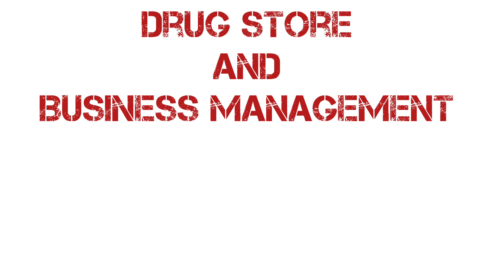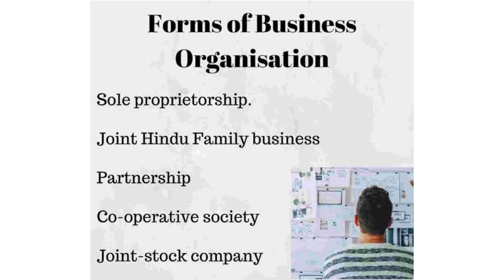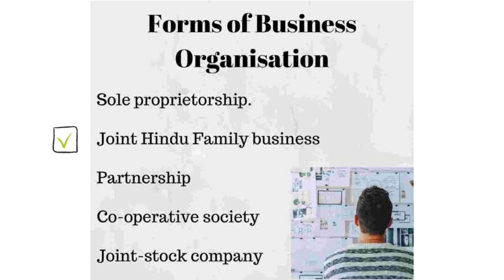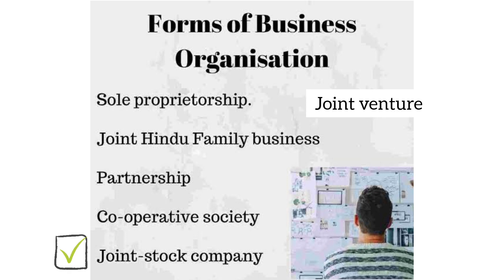There are various business organizations. There are six types of individual forms: individual concern, sole trading concern, partnership, joint Hindu family business, joint venture, joint stock company, and cooperative society.